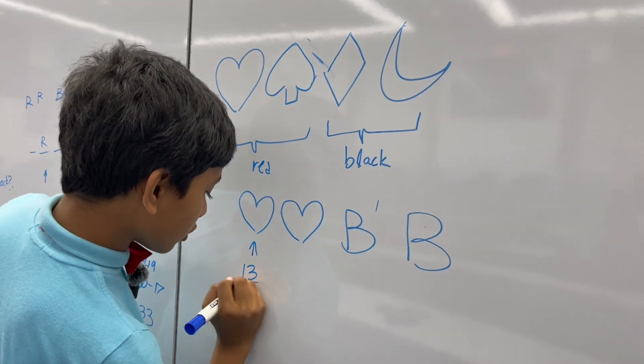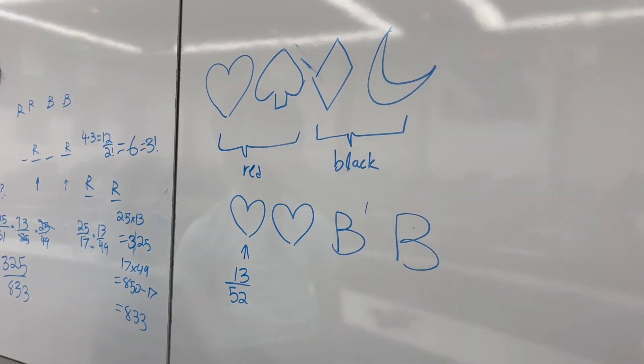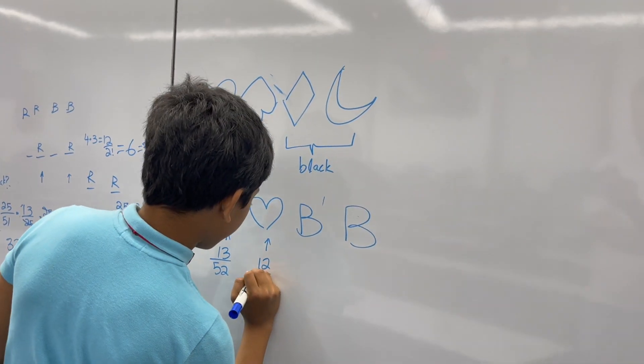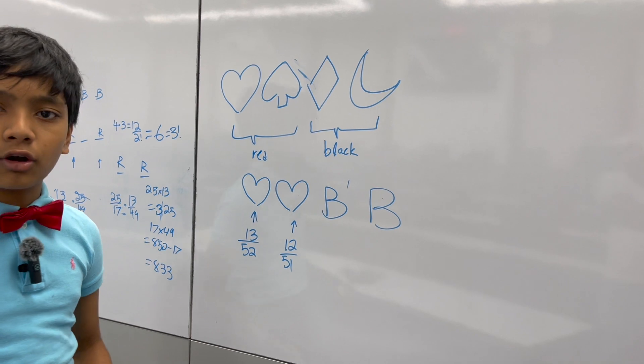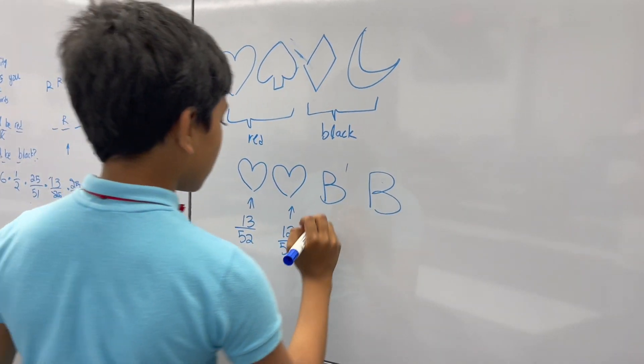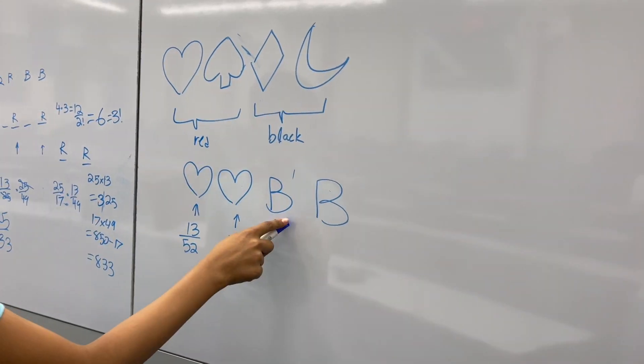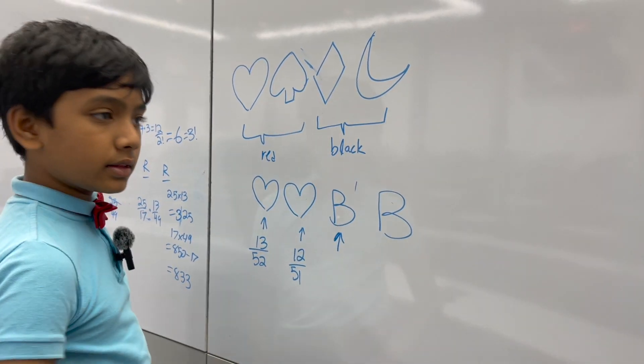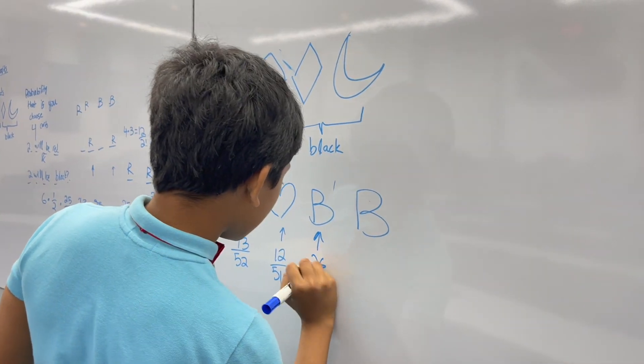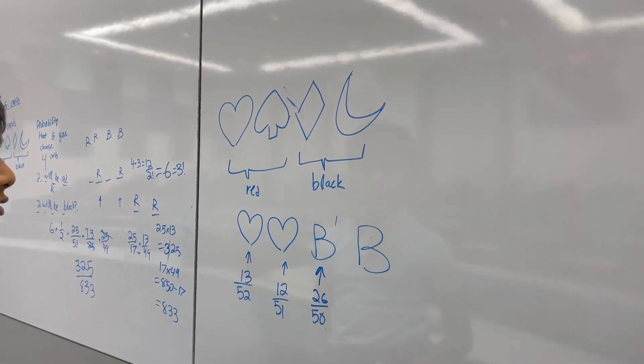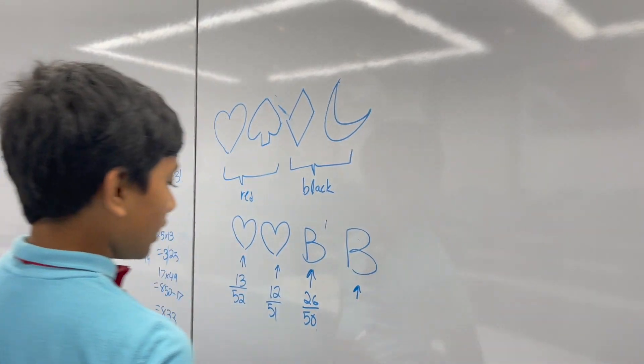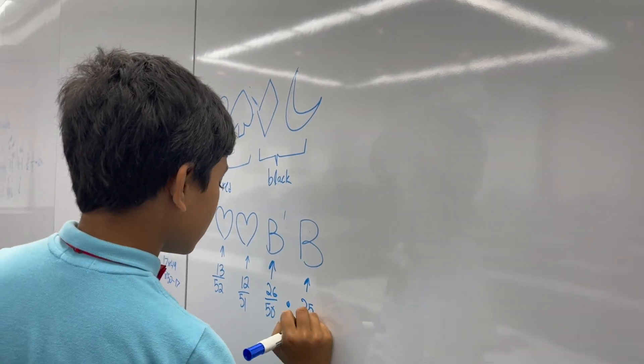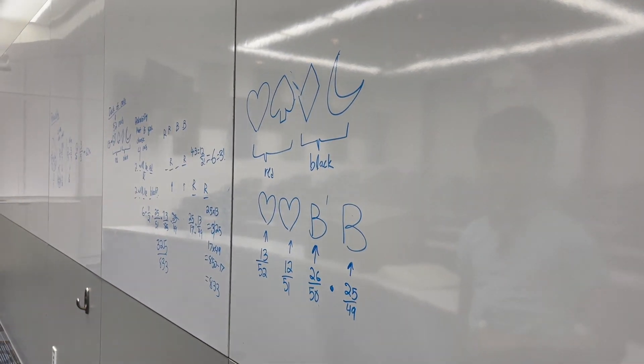So, there's a 13 out of 52 chance you pick something from the heart suit. And then, a 12 out of 51 chance that you pick something out of the heart suit again. And then, if you want a black one, then there's a 26 out of 50 chance that you pick a black suit. And then, a 25 out of 49 chance that you pick a black suit after that.